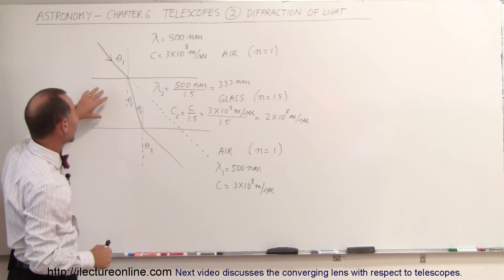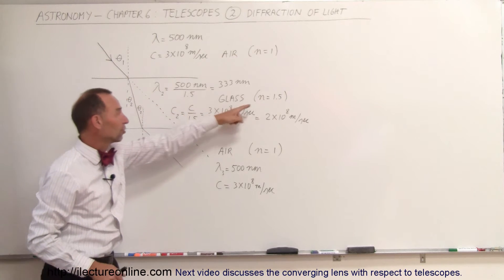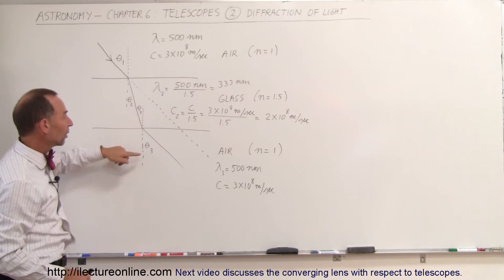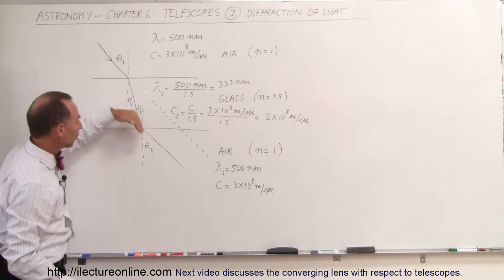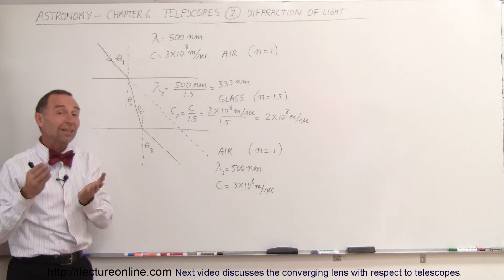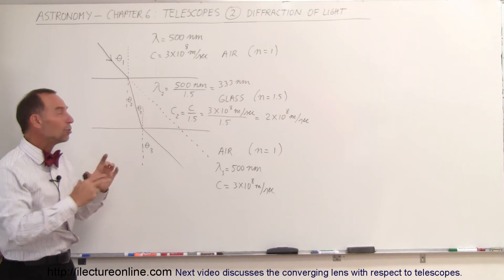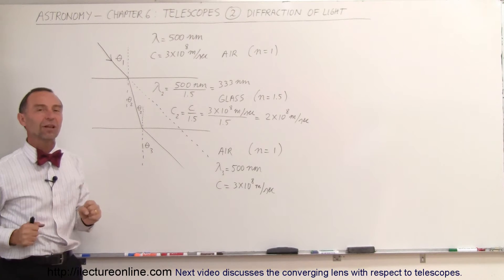And likewise, when it moves from a region where the index of refraction is greater to a region where the index of refraction is smaller, it will bend away from the normal. And that property has enabled us to build lenses. We take advantage of that situation.